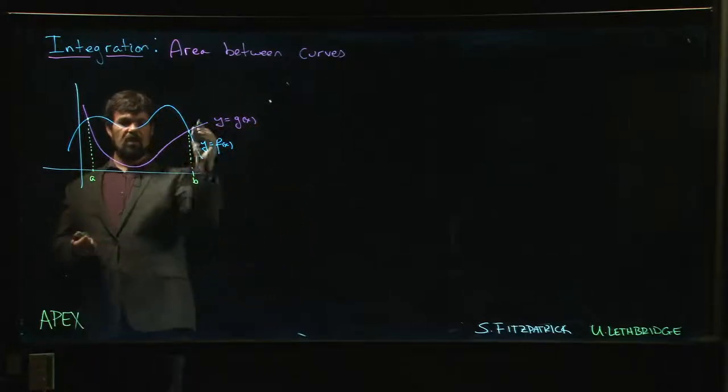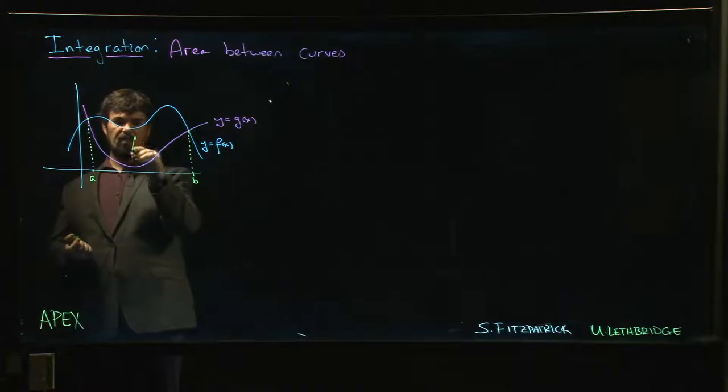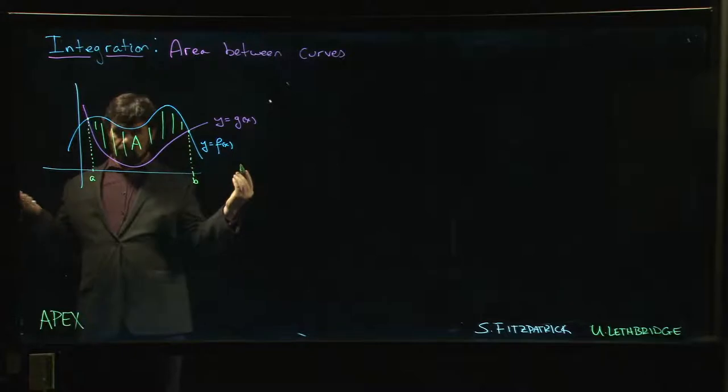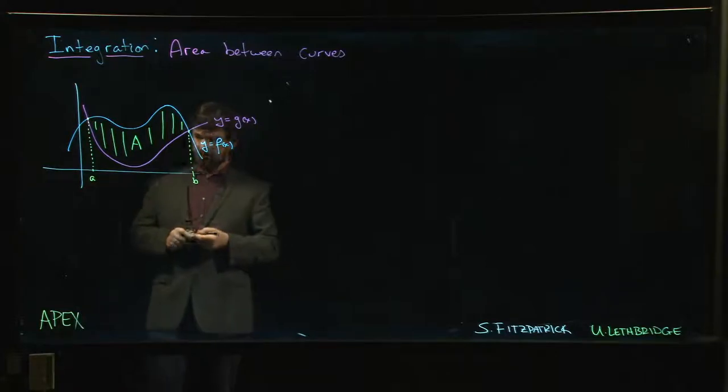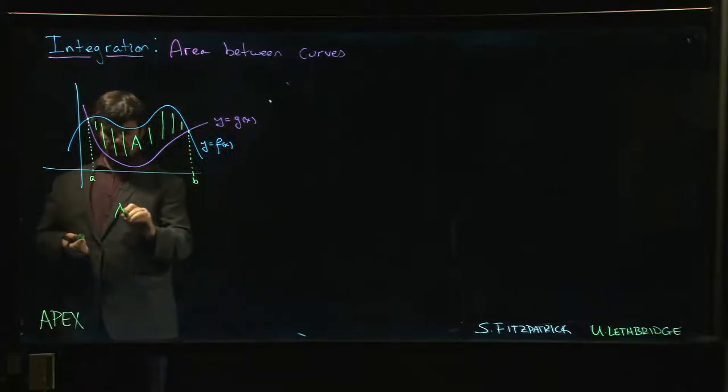f of x and g of x. We've got this region in between here. We want to compute the area. There are a few ways of thinking about this. One is to realize that as I'm drawing it, this area is going to be the area between the curve which is on top, f of x.